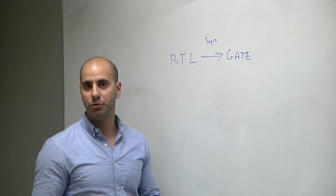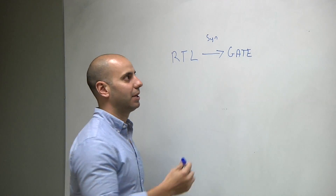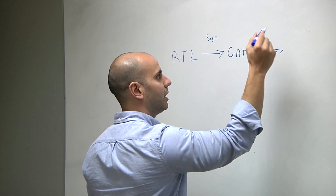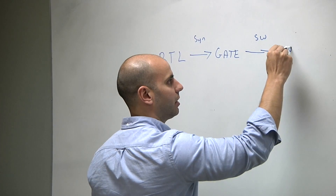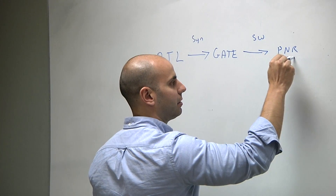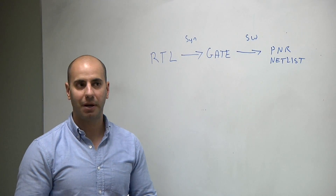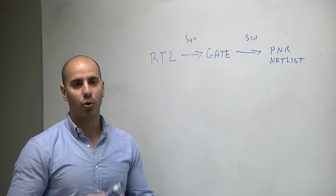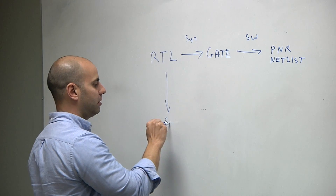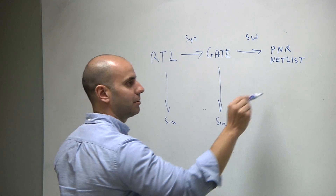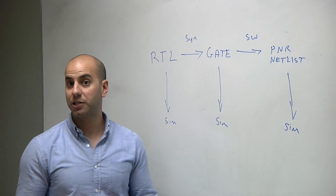This gate-level netlist will be specific to an FPGA, so it'll have things like look-up tables and flip-flops. Then the final step, you'll push it through some software from the FPGA vendor and get a PNR netlist. This will also have look-up tables and flip-flops more specific to the vendor for that FPGA. So all of these steps along the way, you can run simulation, and you're basically just confirming that the output vectors match what the expectation is.